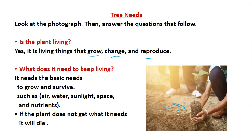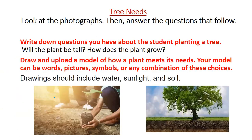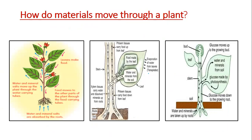Look at this picture. What does it need to keep living? It needs the basic needs to grow and survive, such as air, water, sunlight, space to live, and nutrients. If the plant does not get what it needs, it will die. Then answer the questions: write down questions about this picture — you might ask, will the plant be tall, or how does the plant grow? Then draw and upload a model of how a plant meets its needs. Your model can be words, pictures, or symbols. When water gets into the plant through the roots, it is transported up the stem through xylem tissue, then into the leaf where photosynthesis takes place. The food made by the leaf is transported in all directions by the phloem tissue.